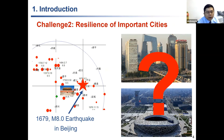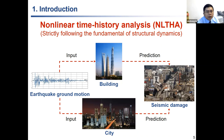About 300 years ago, a magnitude 8 earthquake occurred just in the eastern suburban area of Beijing. If this earthquake happened again in today's Beijing, what would happen? This is a big challenge, particularly when we care not only about safety, but also the resilience of this important city. Because we don't have sufficient data or experience, the only thing we can do is go back to the fundamentals of structural dynamics.